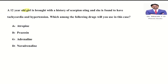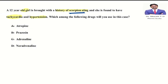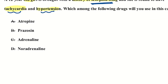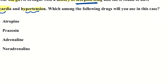Moving to the third question: a 12-year-old girl is brought with a history of scorpion sting and is found to have tachycardia and hypertension. Scorpion sting is very common in India; when there is a scorpion sting, there is an increase in sympathetic discharge, which causes tachycardia and hypertension. Which drug is used in this case?